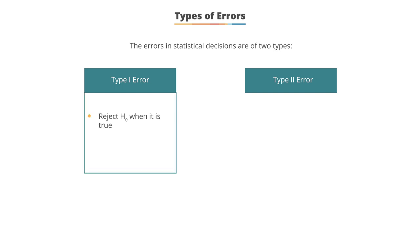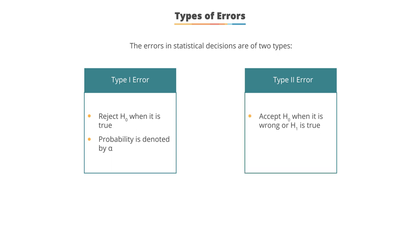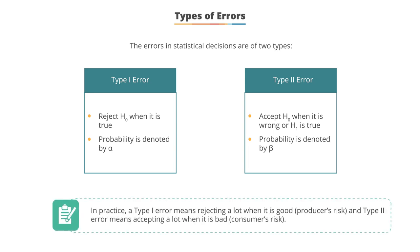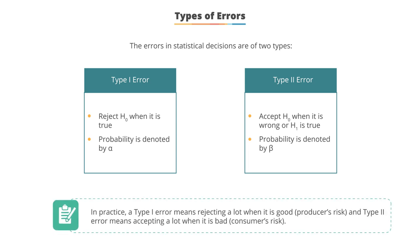A type 1 error is rejecting the null hypothesis when it's actually true, and that probability is denoted by Cronbach's alpha — you can see the Greek letter alpha. Type 2 error is accepting the null when it's wrong, and that probability is denoted by beta. So in practice, a type 1 error means rejecting a lot when it's good, and a type 2 error means accepting a lot when it's bad.